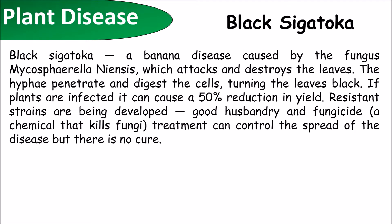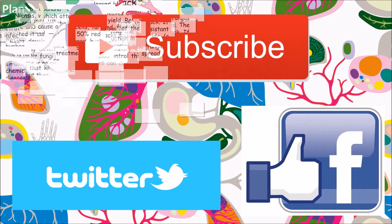Black Sigatoka is a banana disease caused by a fungus that attacks and destroys the leaves. The hyphae penetrate and digest the cells, turning the leaves black. If the leaves have been turned black they can no longer photosynthesize.